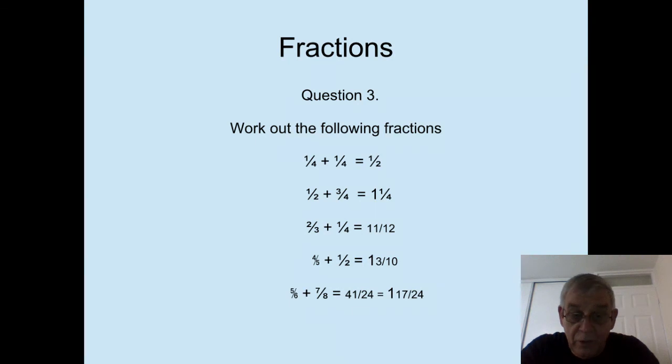The fifth part of question three is five sixths plus seven eighths. The lowest common denominator for six and eight is twenty-four. Six goes into twenty-four four times, and eight goes into twenty-four three times. So we say six into twenty-four goes four times, times the five on the top, gives us twenty. And we have eight into twenty-four goes three times, times the seven, which is the numerator from seven eighths, gives us twenty-one.